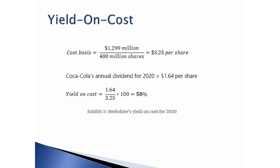Warren Buffett was somebody who used this strategy to become one of the wealthiest people on this planet. The concept I wanted to familiarize you with is called yield on cost, and it's quite simple and powerful. So Warren Buffett's cost basis was $1.3 million — that's what Buffett paid for 400 million shares in Coke at $3.25 a share.